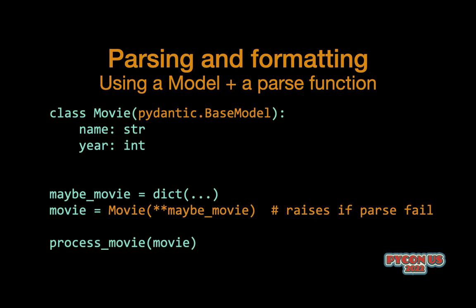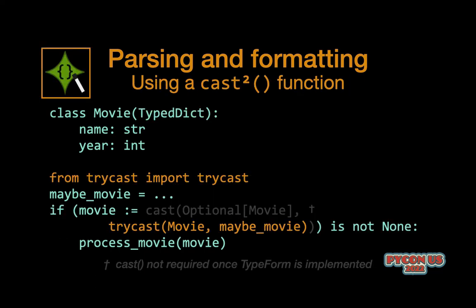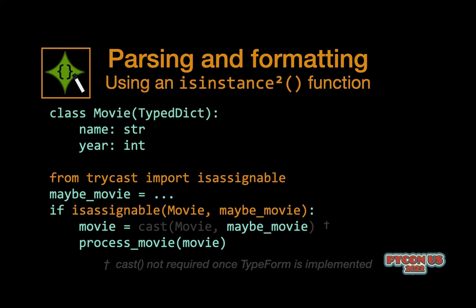Since I'm running low on time, here's how you do it in Pydantic: you declare a base model, and if you pass in something that doesn't conform to the declared annotations, it will fail at runtime. If you're using the typed dict strategy, it's easier to use a smart cast function, which checks whether something is assignable to the movie type at runtime and returns it if it is, or returns None if it's not. You can also just use an isinstance function — there are many different modules providing this, and this example uses the one from TriCast, but as mentioned earlier there are several others as well.